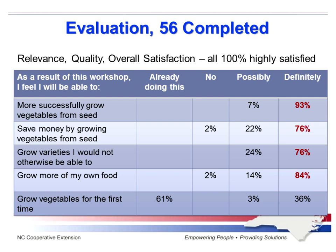Questions on the evaluation included whether the workshop gave participants knowledge and skills to more successfully grow vegetables — 93% were a definite yes. Most people were definitely sure they were going to save money by growing vegetables from seed, be able to grow varieties they hadn't grown before, and grow more of their own food. The last question about growing vegetables for the first time was meant to gauge how many were first-time gardeners, but it probably should have been its own question. It looked like most people were already growing vegetables — we didn't have a lot of first-time gardeners.